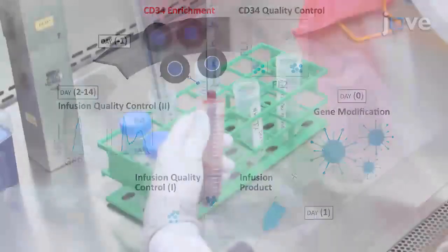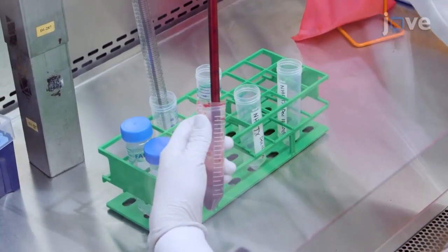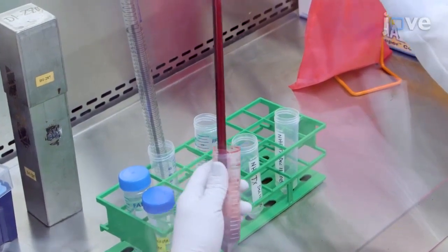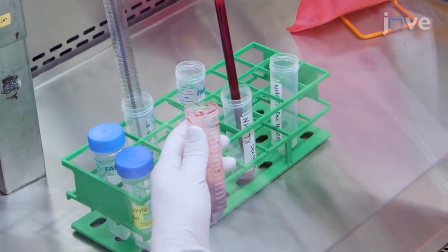Begin by adding 10 to 12 milliliter aliquots of bone marrow isolated from a healthy non-human primate donor into 50 milliliter conical tubes.